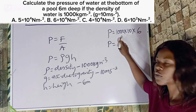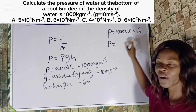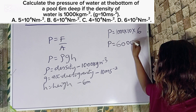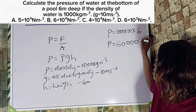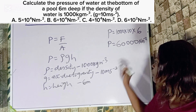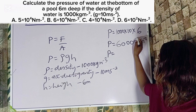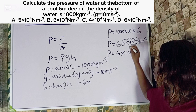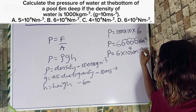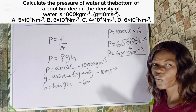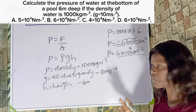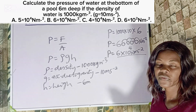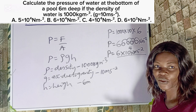Pressure equals 1000 times 10 is 10,000, multiplied by 6 gives us 60,000. This is measured in Newton per meter squared. Putting this in standard form: 1, 2, 3, 4 — this is 6 times 10 to the power of 4 Newton per meter squared. You must know that the formula for pressure is force over area or rho times g times H, depending on the question. The correct option is Option B.